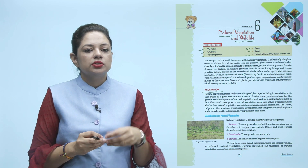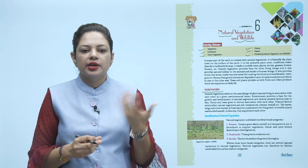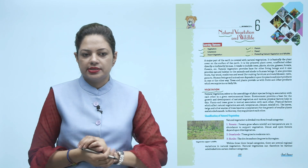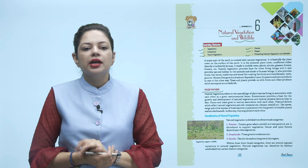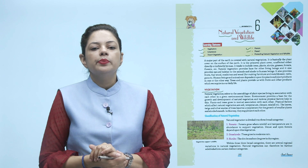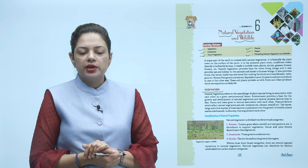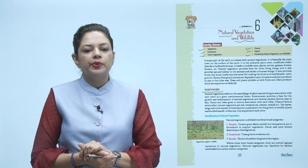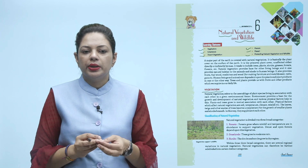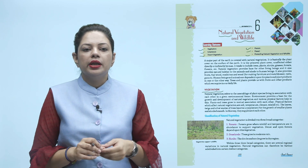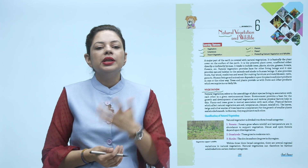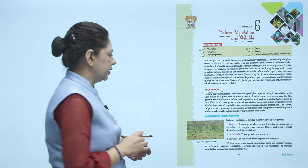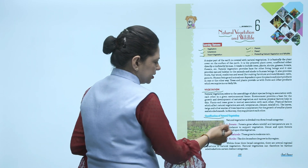Vegetation depends on different physical factors in different areas — such as soil type, temperature, climate, and rainfall. The leaves, twigs and other waste of trees become a supplement for the growth of smaller plants and shrubs beneath — they supplement each other. Natural vegetation has been divided into different types: forest, grassland, and shrub.